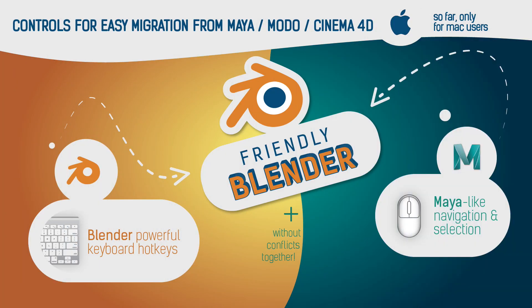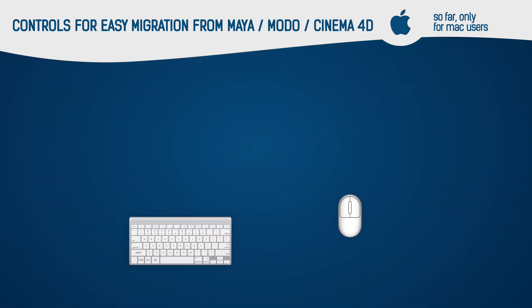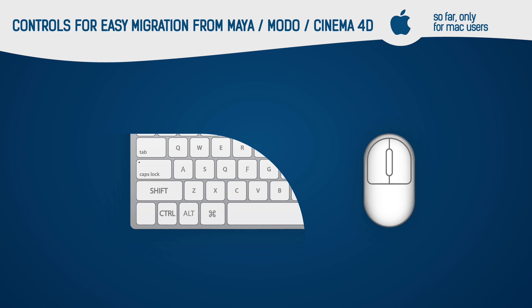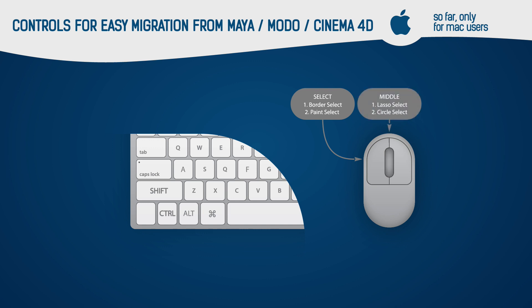Before I demonstrate the convenience of the new controls, let's see what has changed. First, look at the mouse controls. The left mouse button, also known as the select button, in addition to the usual selection command, now performs orbit select and plane select operations. The middle mouse button performs lasso select operation and circle select operation from double click.